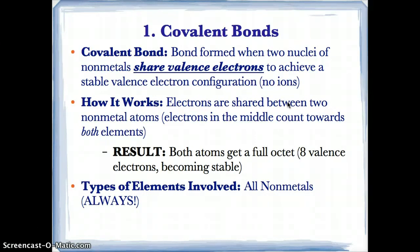Since the nonmetal atoms are only sharing, there's no loss or gain of electrons, so they stay exactly the way they are. There are no ions formed — no positive ion, no negative ion. The atoms only share valence electrons, so they stay exactly as they are.